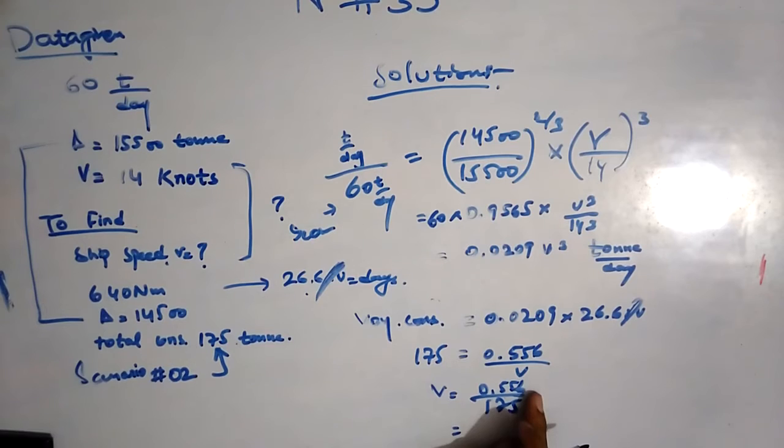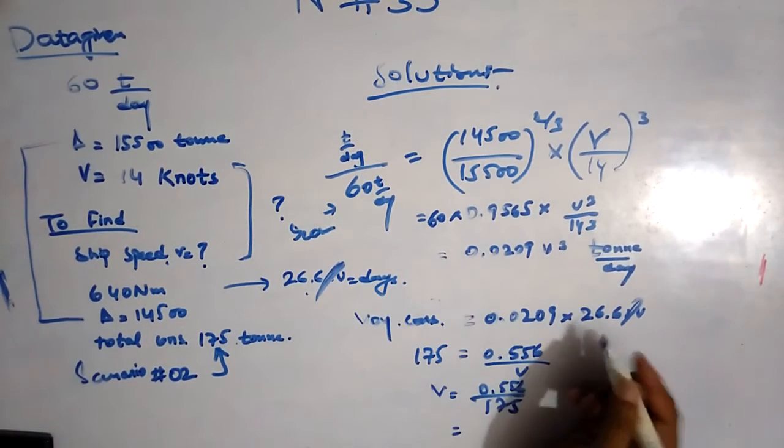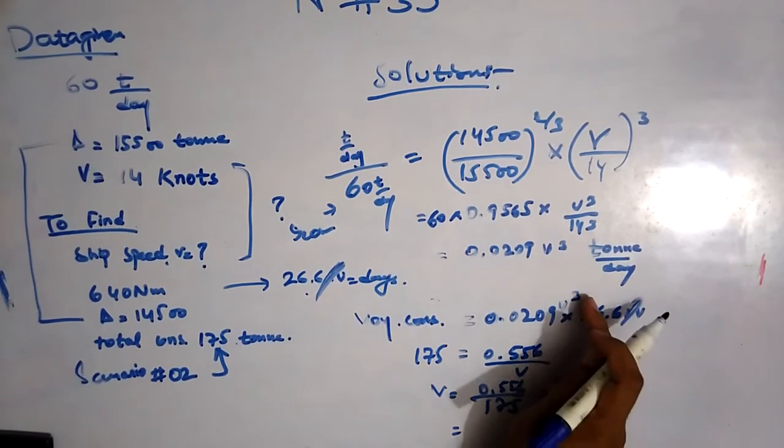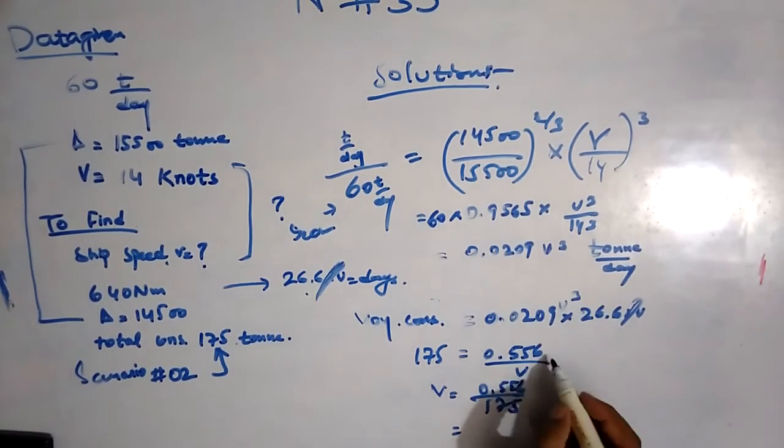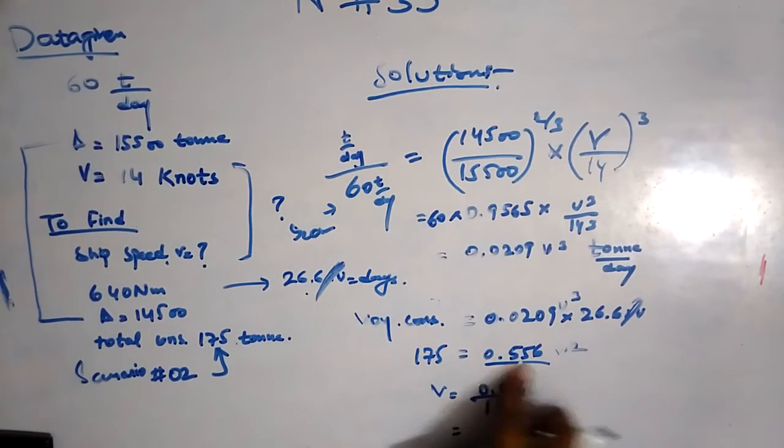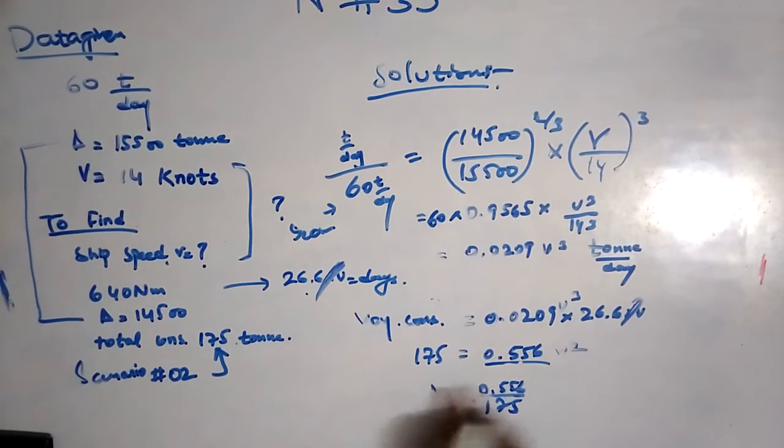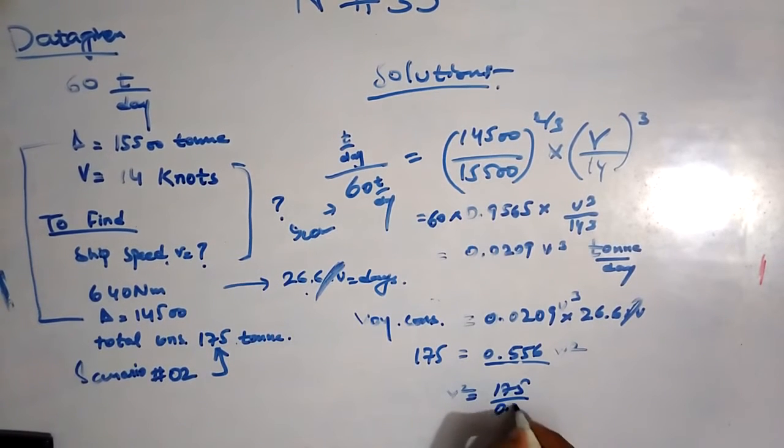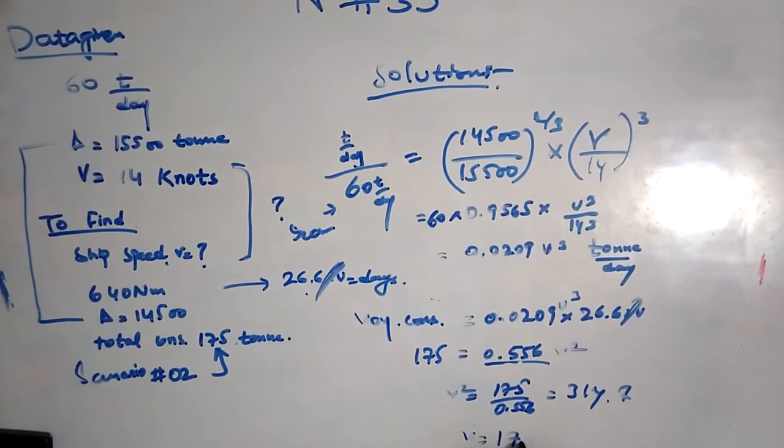We have the velocity. It's V cubed. It will be cut by this or we will have remain only V squared. V squared will remain. For the V squared, 175 divided by 0.556, 314.7, and the root of it. This gives us 17.74 knots.